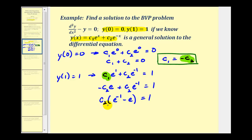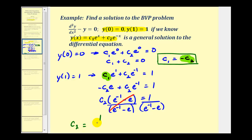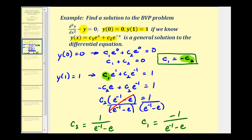Dividing both sides by the quantity (e⁻¹ − e) to solve for c₂, we find c₂ = 1/(e⁻¹ − e). Since c₁ and c₂ are opposites, c₁ = −1/(e⁻¹ − e). This is all the information we need to solve this BVP — we now know both c₁ and c₂, so let's write the solution on the next slide.